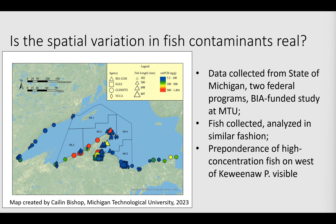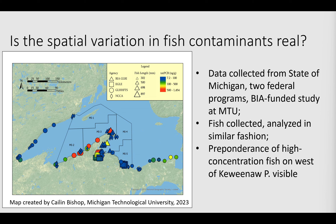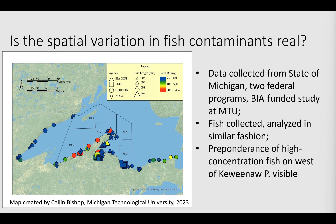The possible explanations for this are that it's simply an artifact of measurement. It's very expensive to measure contaminants in fish, and as a result we don't measure hundreds of fish — we generally collect a handful of samples, five to ten in any given area, and that may be inadequate to characterize the spatial variability. This is not likely to be coming from spatial variation in inputs of the contaminants themselves. Rather, the spatial variability is likely to reflect differences in ecosystem processes such as food chain length, resource availability, and ultimately trophic transfer efficiencies.